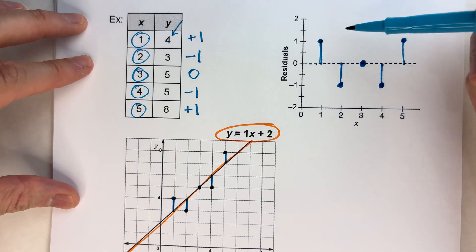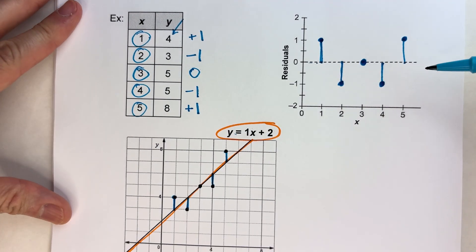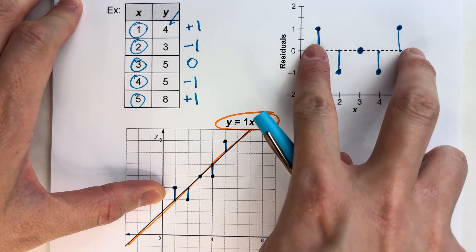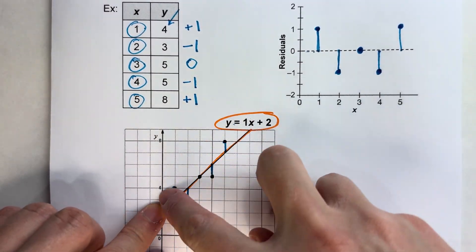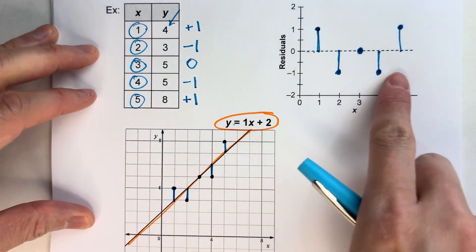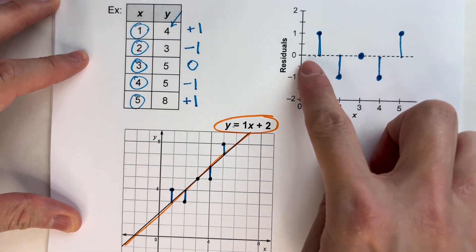So that's kind of a visual of how far away our data was from our prediction. And if you look at this, it looks very similar to this, right? It's almost this whole kind of picture right here, almost as if we took the line and just straightened it out. And that's kind of what it looks like right here.